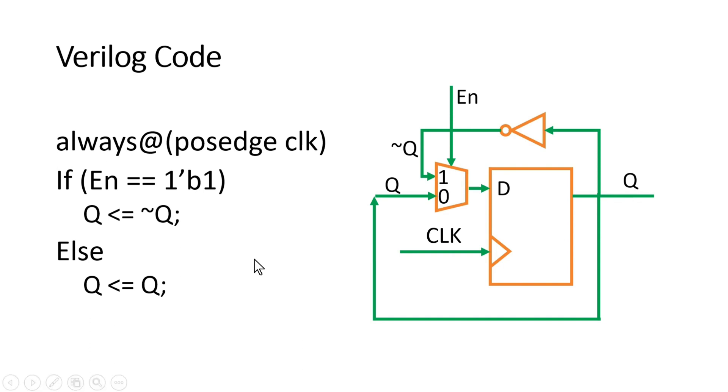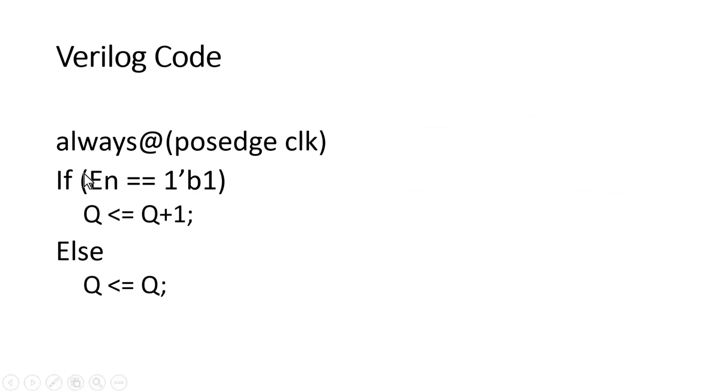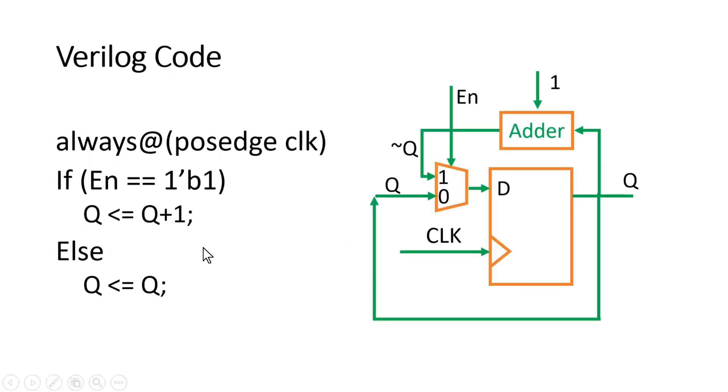In the problem statement, it was nowhere given that Q should be negated when enable is equal to high. The more precise behavioral code should be something like this: when enable is high, Q should be equal to Q+1. Else, Q should be equal to Q. Now from this behavioral code, you can easily derive the logic circuit diagram. So it will be something like this.